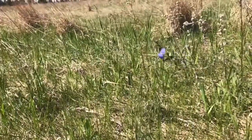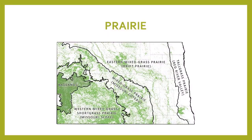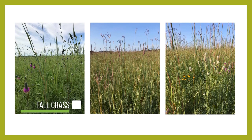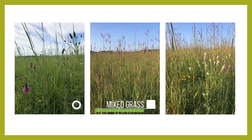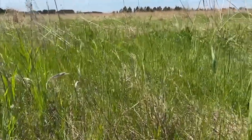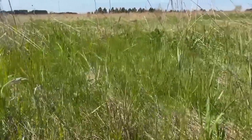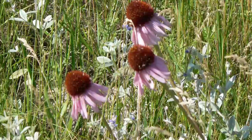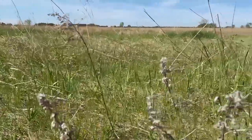Before European Americans settled in North Dakota, grasslands covered almost the entire region. The three types of prairies found in North Dakota are tall grass prairie, mixed grass prairie, and short grass prairie. Each one is made up of a variety of grasses, forbs, and wildflowers. The unique plants found throughout the prairie provide food and cover for numerous wildlife species.